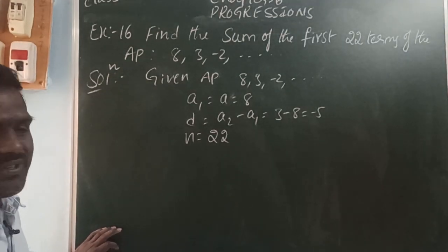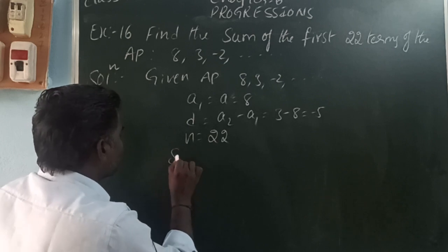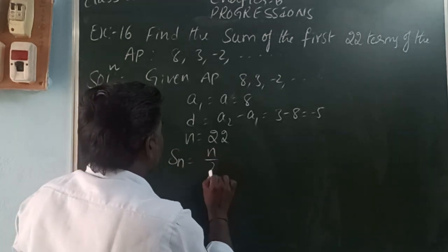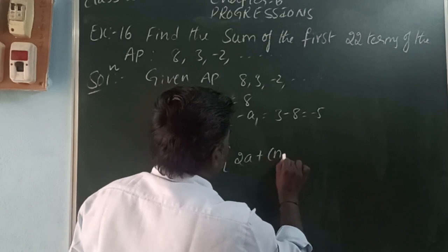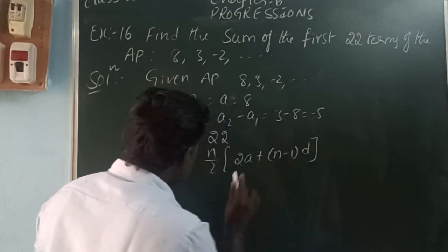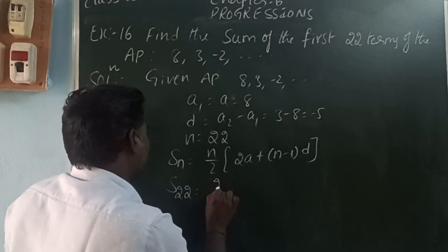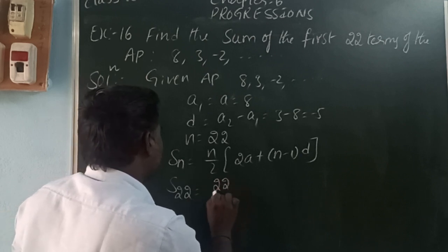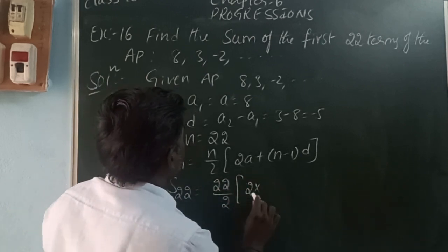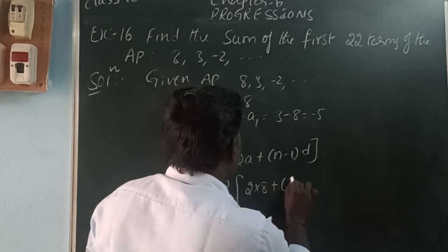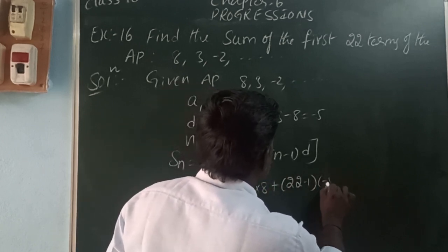Using the sum of n terms formula: Sn = n/2 × (2a + (n-1)d). S22 = 22/2 × (2×8 + (22-1)×(-5)) = 11 × (16 + 21×(-5)) = 11 × (16 - 105).